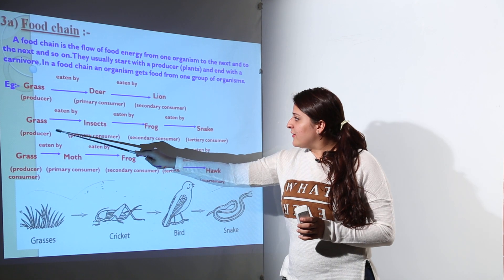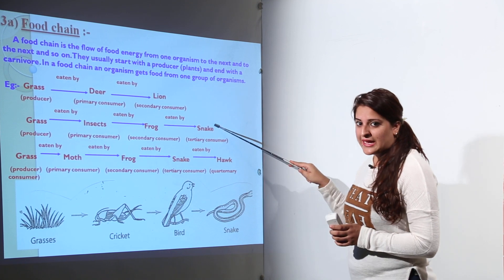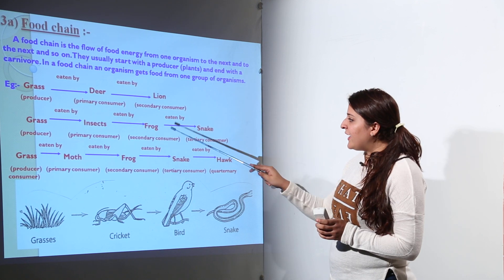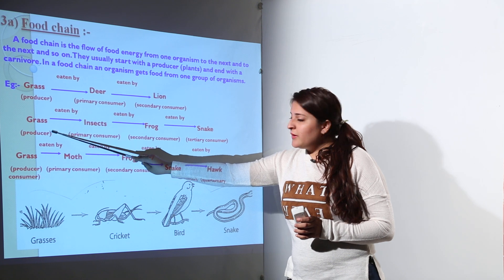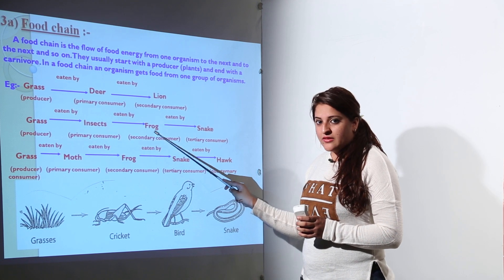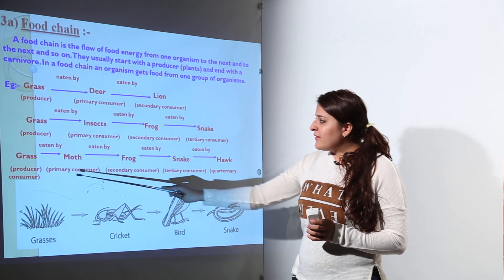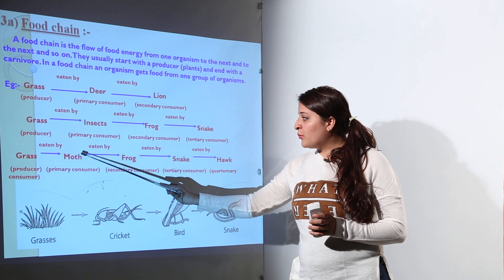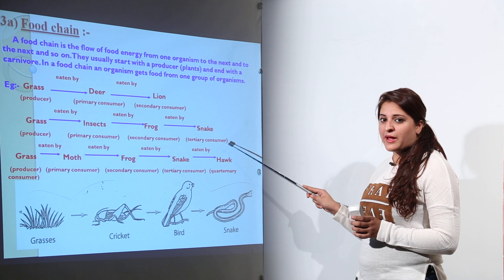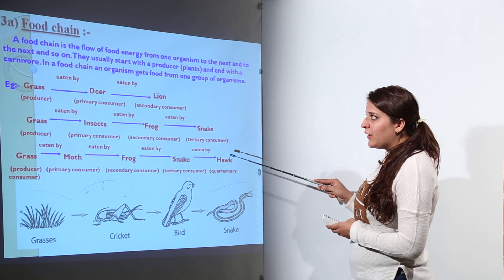Another example: grass is eaten by insects, insects are eaten by a frog, and the frog is eaten by a snake. Here grass is the producer, insects are the primary consumer, frog is the secondary consumer, and snake is the tertiary consumer. Another example: grass is eaten by a moth, moth is fed upon by a frog, frog by a snake, and snake by a hawk — another example of how a food chain persists in the environment.